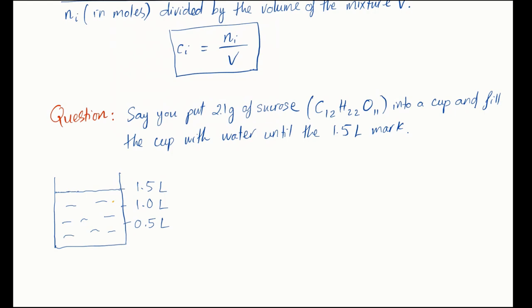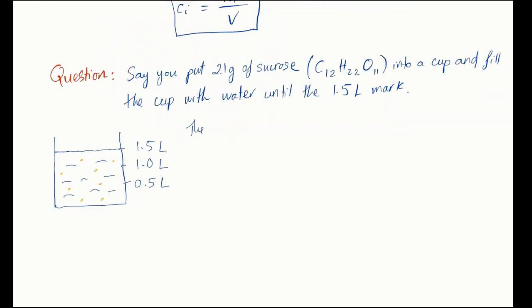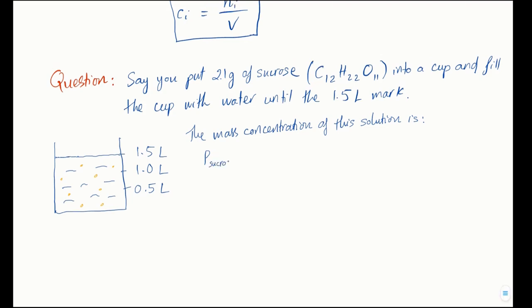Let's calculate the mass concentration and the molar concentration of this solution. The mass concentration of sucrose in this solution is equal to the mass of constituent, which is 2.1 grams, divided by the amount of volume, which is 1.5 liters, which is equal to 1.4 grams per liter.